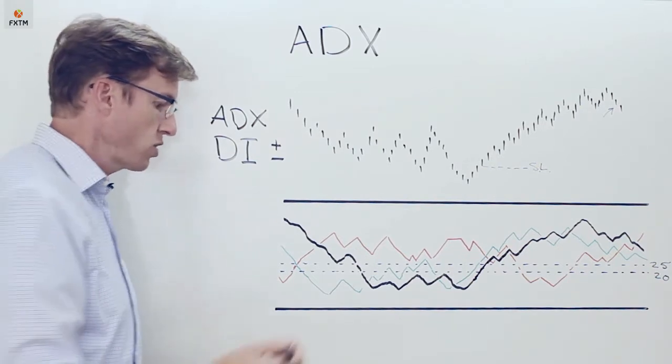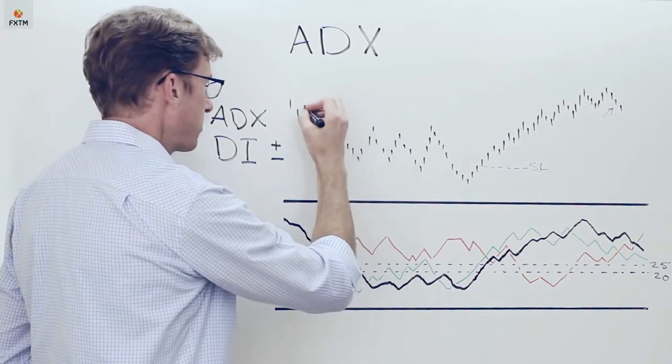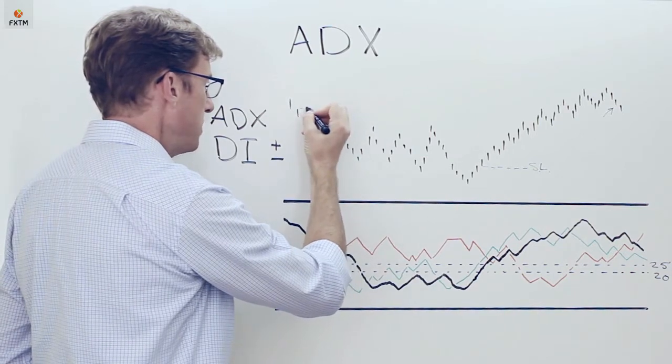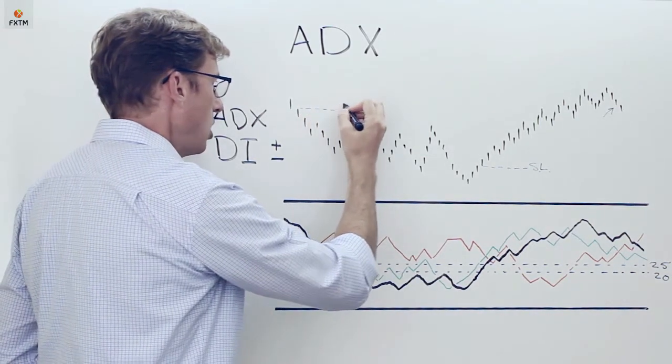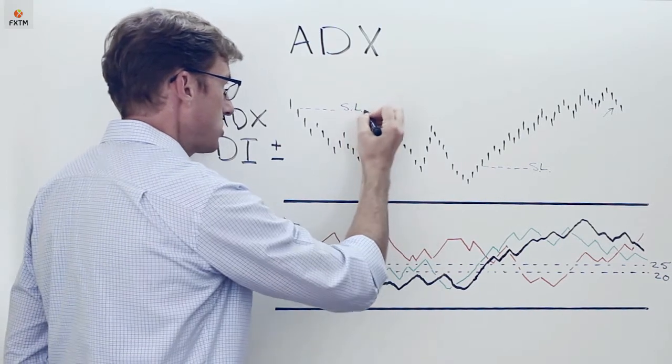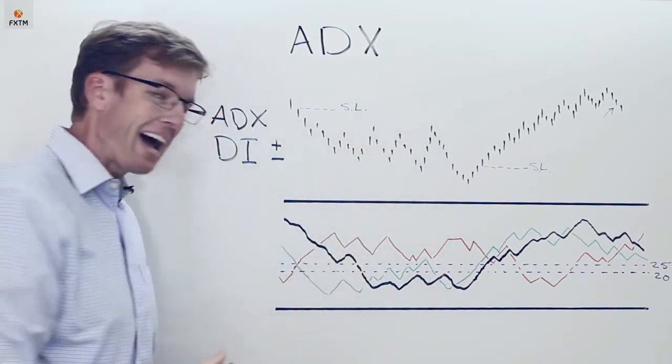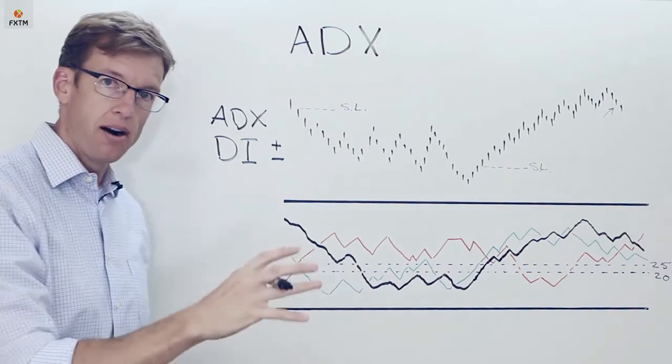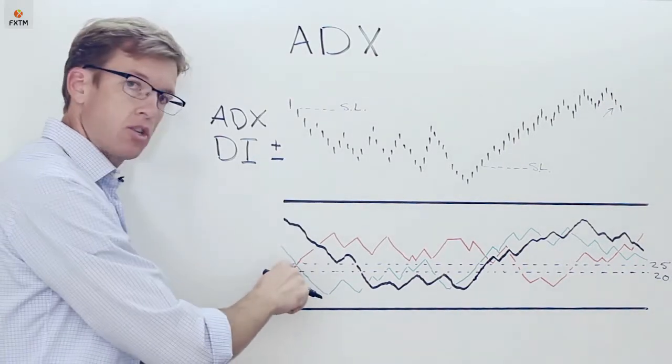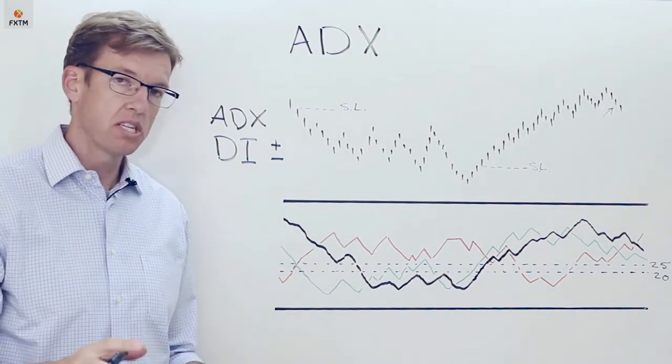Now again, the extreme point rule would apply. Let's say, for example, that that scenario played out on this bar right here, where an investor would potentially consider certainly placing a stop loss at the high of that bar that coincided with the trigger there for a short position.